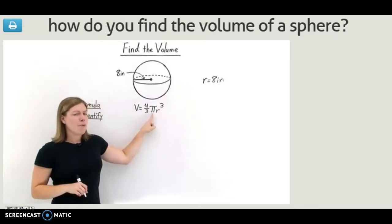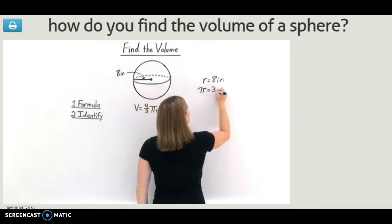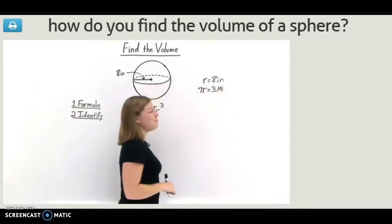Now, what about pi? Pi is an irrational number. And in order to get the volume for this problem, let's approximate pi to be the decimal 3.14.